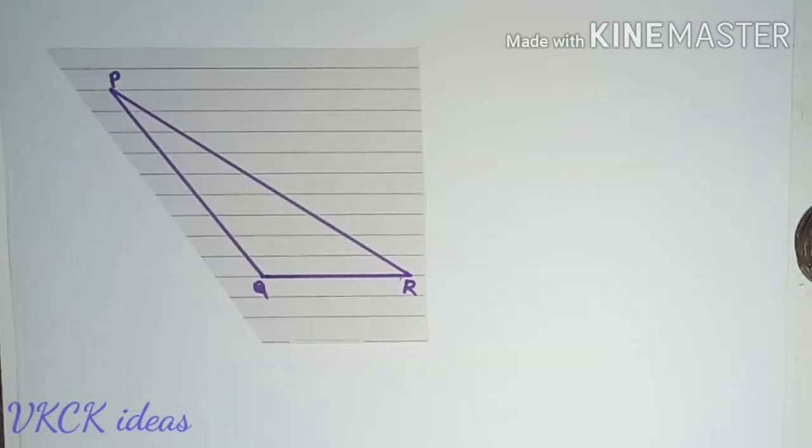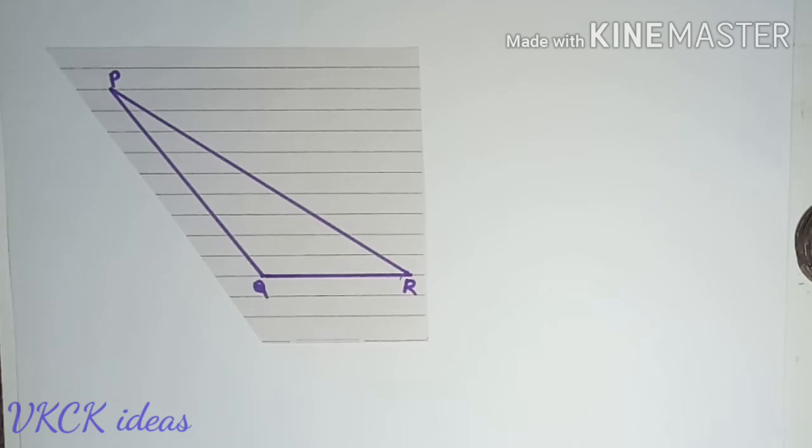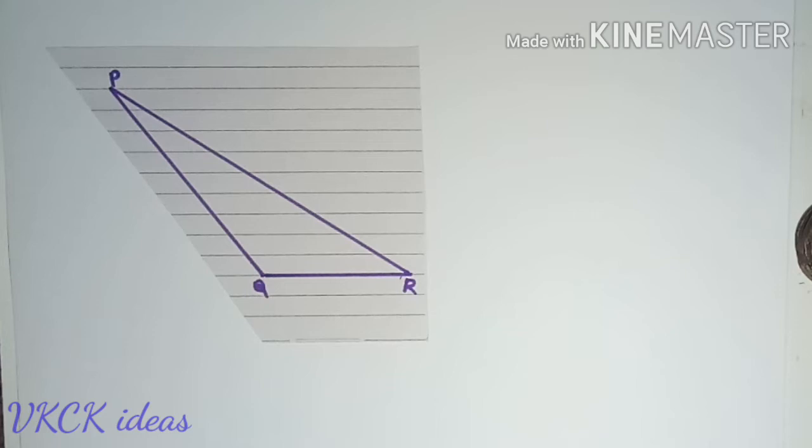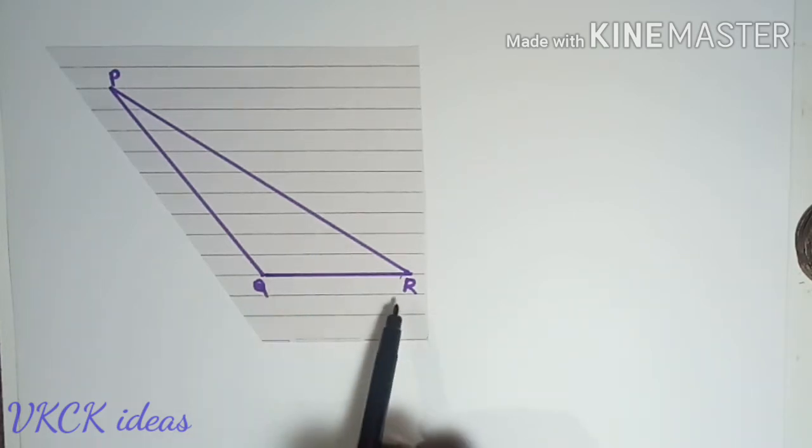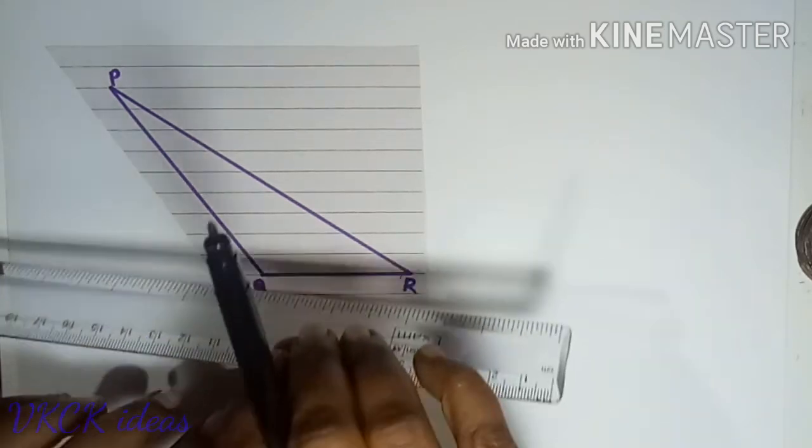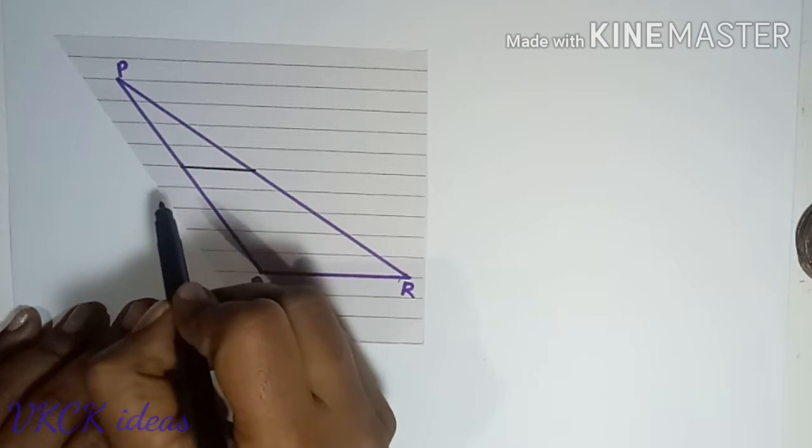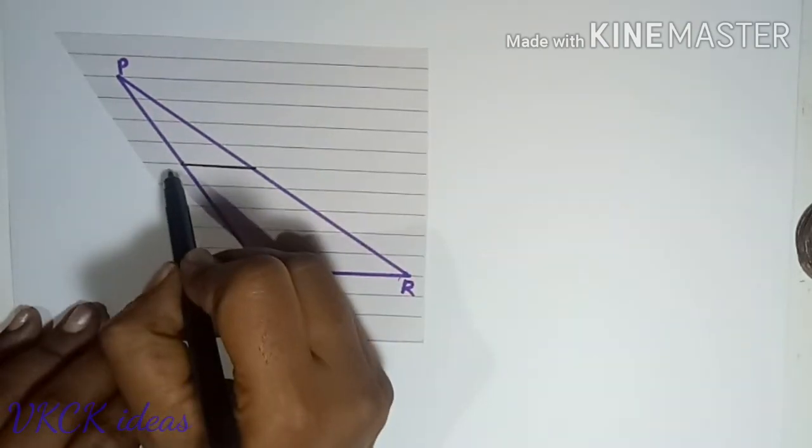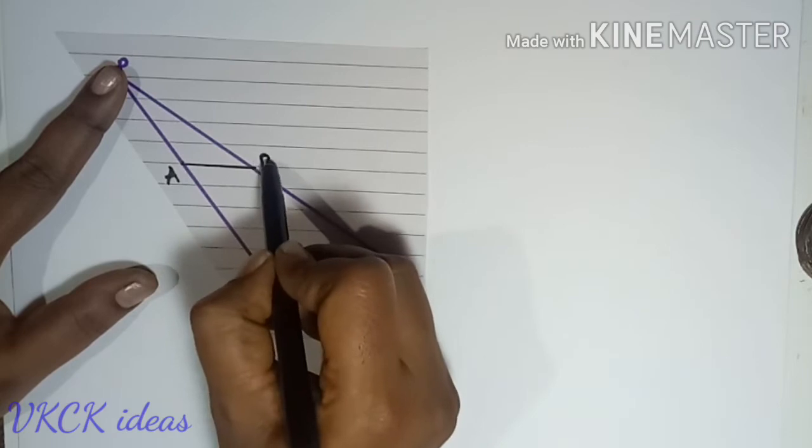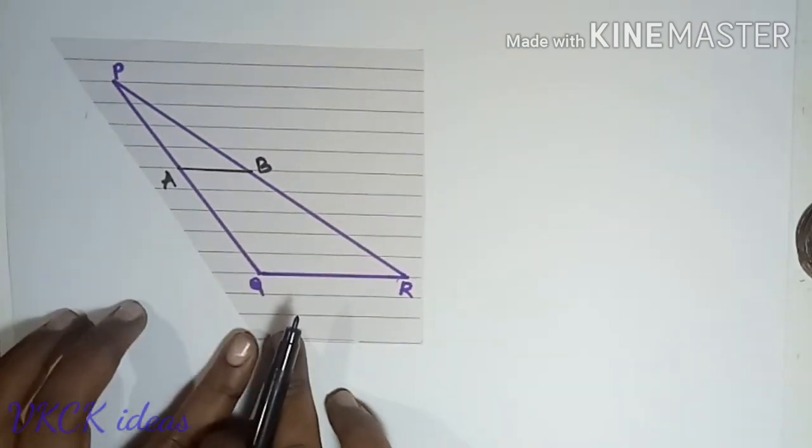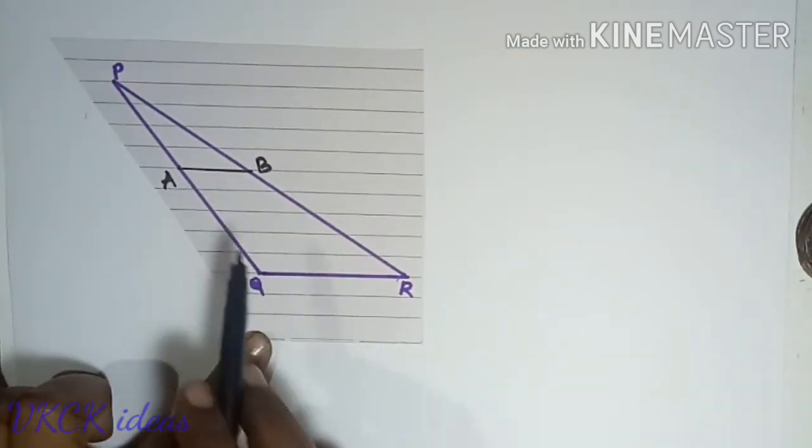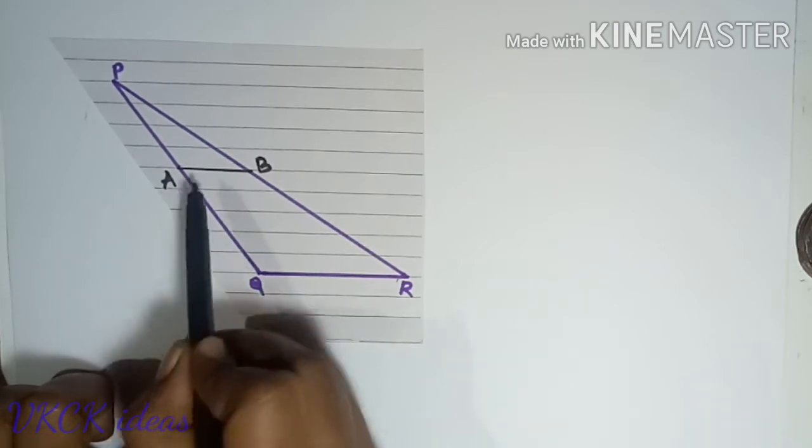Yes it is. I have a triangle PQR. I have drawn it on ruled paper. So every line here is parallel to QR. Let me choose any one of the lines, say here. Let me name it as AB. Now line AB is parallel to QR.